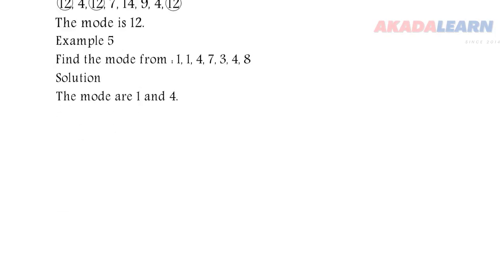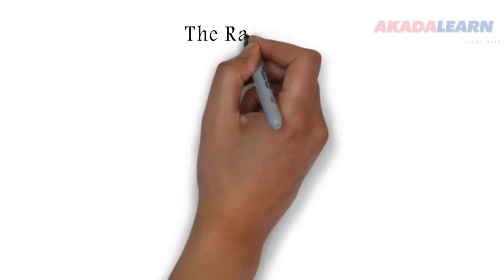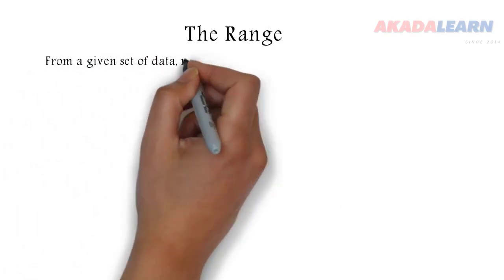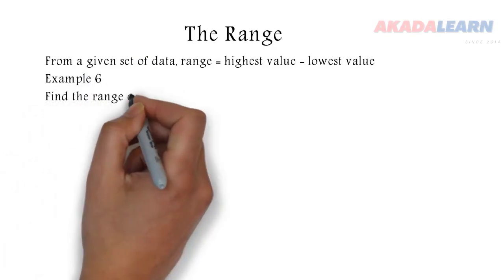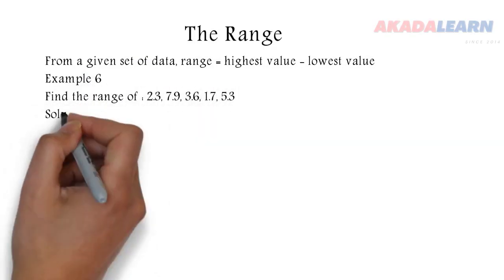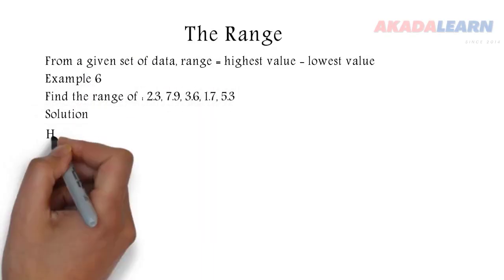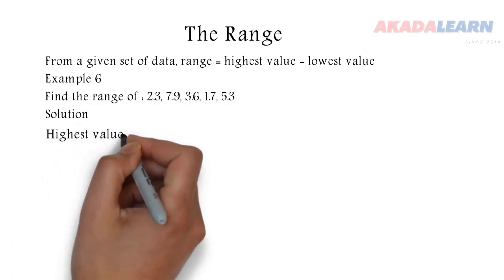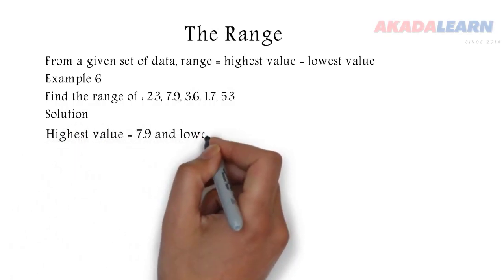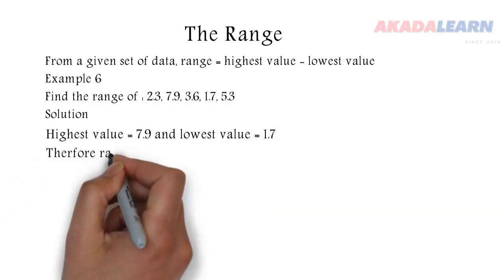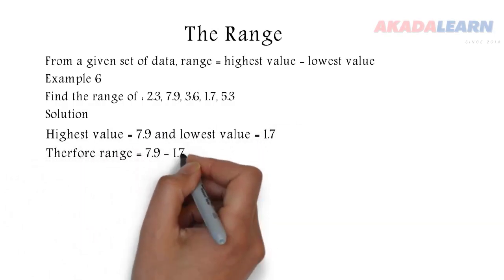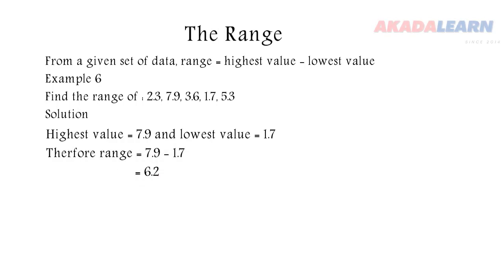Let's see the range now. The range is simply the highest value minus the lowest value from the given set of data. The highest value from that example is 7.9 and the lowest value is 1.7, so we remove the lowest value from the highest value and we have our range.